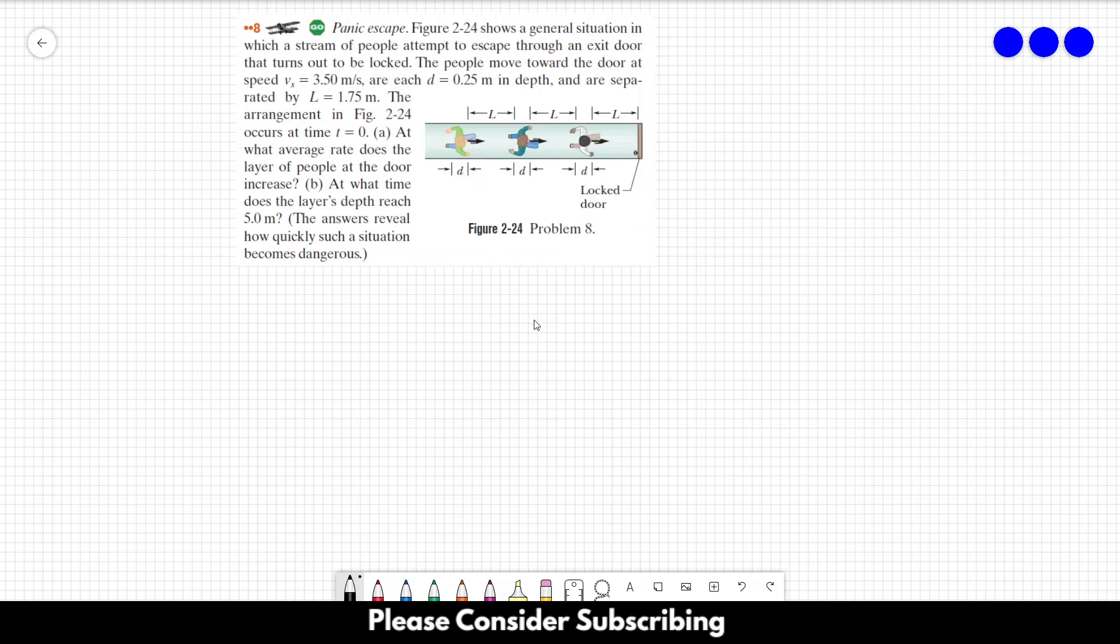The people move toward the door at a speed of 3.5 meters per second and are each 0.25 meters in depth and are separated by 1.75 meters.